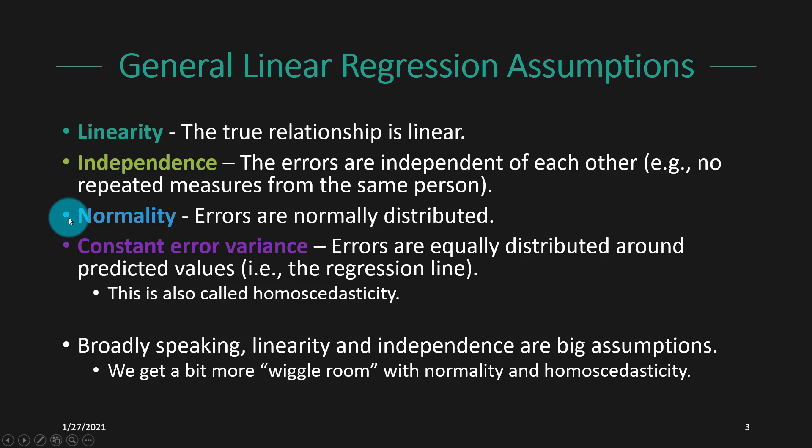Third, we assume that there is a normal distribution of the errors. We think the errors should be approximately normally distributed in order for our calculations of the standard errors and the p-values to be correct. They only have to be approximately normal, not perfectly normal, but at least approximately normally distributed for our calculation of p-values to be robust.